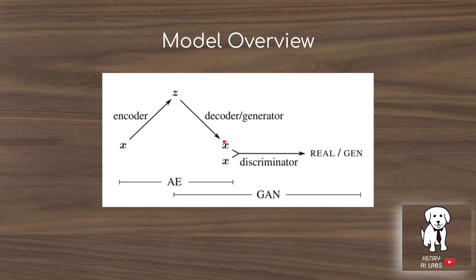The evaluation of this generated image is done by the intermediate features of the discriminator, as well as the discriminator's task of determining whether the image is a reconstructed image or one of the original images.